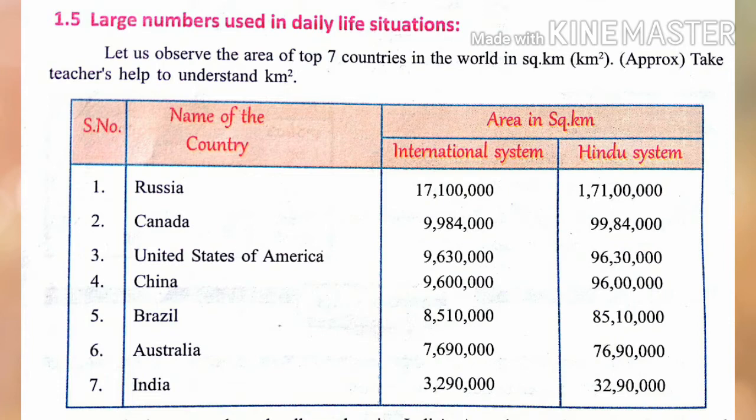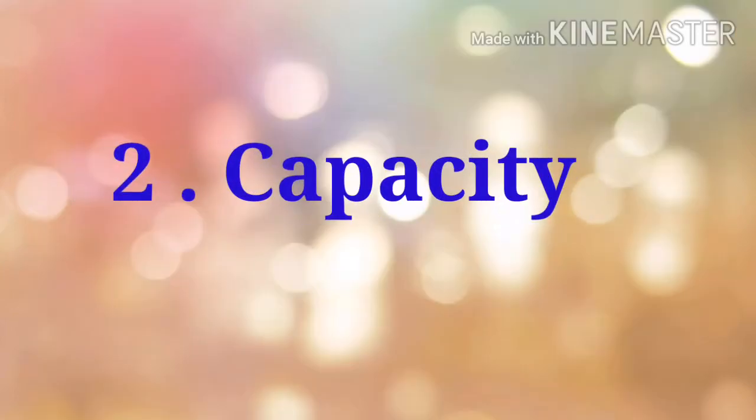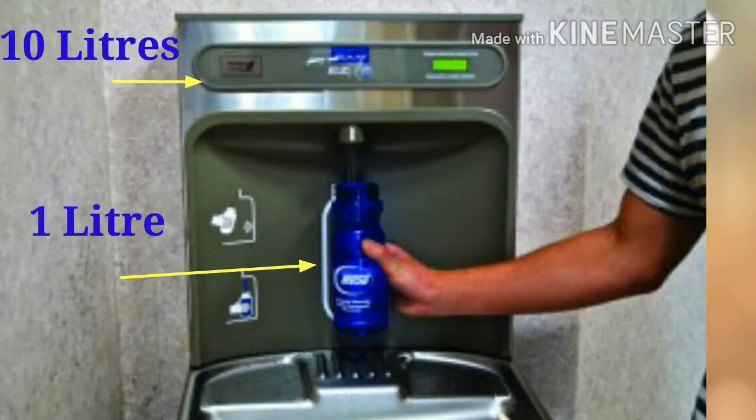Let us consider the area of the top seven countries in the world in square kilometers. Let us read the area of our own country, India, that is 3,290,000 square kilometers. Now let us move on to capacity.